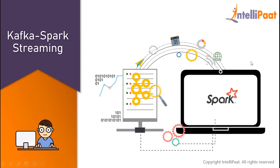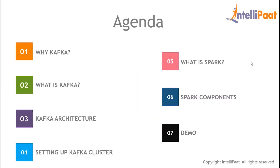Hey guys, welcome to the session on Kafka Spark Streaming. So let us see the agenda for today. We'll start off by understanding how Kafka came to existence, then understand what is Apache Kafka, followed by the architecture of Apache Kafka and how to set up a Kafka cluster. Going ahead we'll understand what is Spark and have a look at its various features. After that we'll see different components of Spark, and at last we'll implement a demo to integrate Spark Streaming with Apache Kafka.